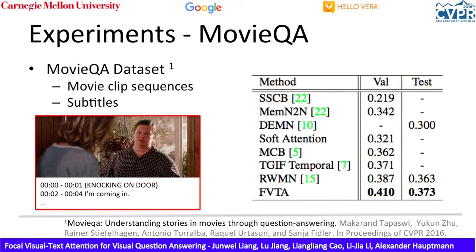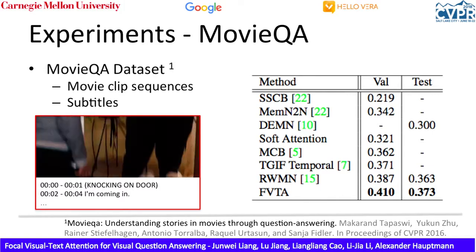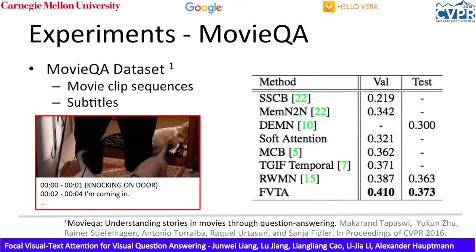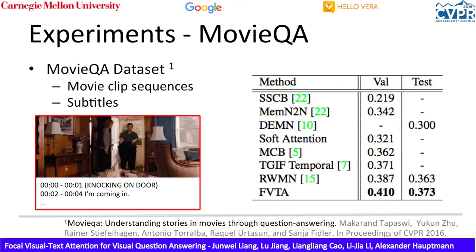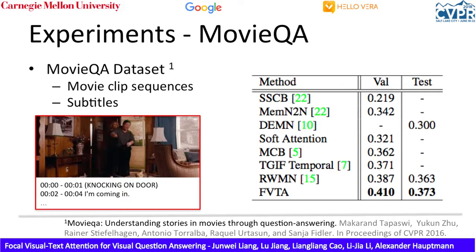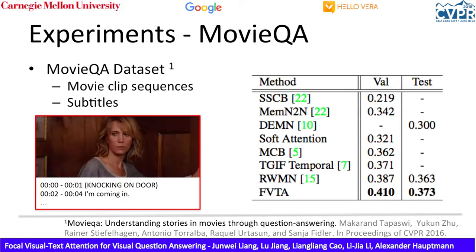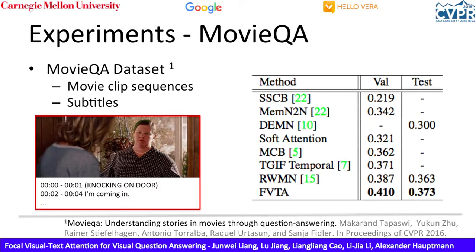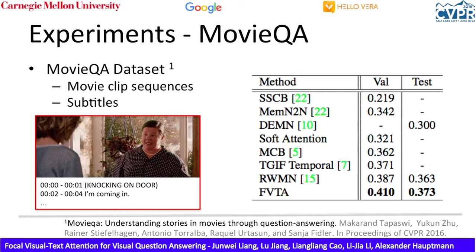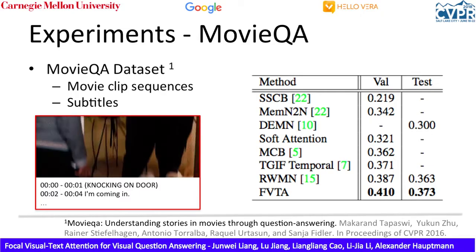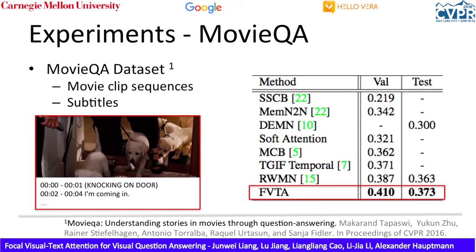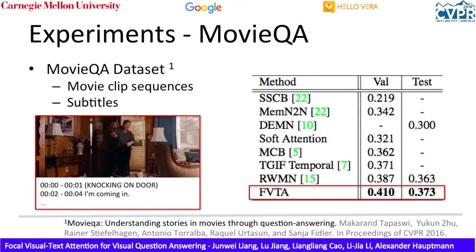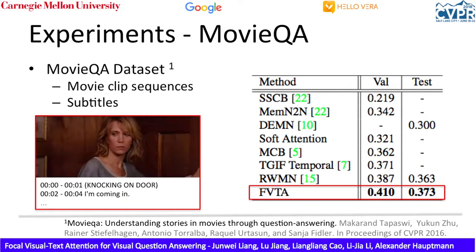We also experiment with the Movie QA dataset, where both movie clip sequences and subtitles are given. Movie QA has been a popular benchmark for collective reasoning since 2016. Our FVTA model achieves superior results compared to other VQA methods.